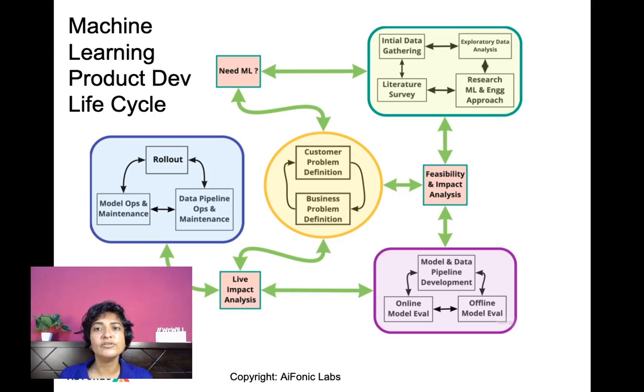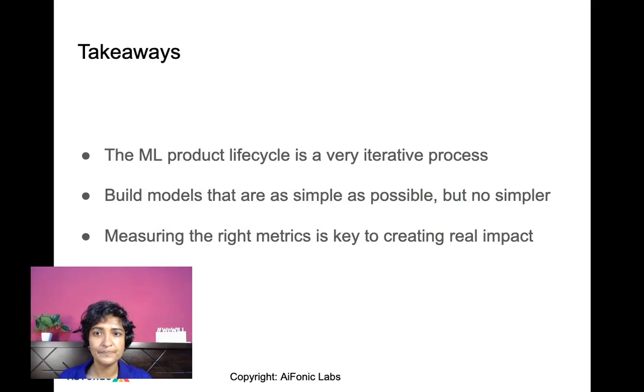So this is a brief view of the machine learning product development lifecycle. And once again, in order to minimize the risk in terms of getting the kind of impact that you want, some things to keep in mind are the ML product lifecycle is a very iterative process. We want to build models that are as simple as possible to begin with, but no simpler. Should not shy away from actually building more sophisticated models if you think they can make an impact. Measuring the right metrics is extremely important to create real impact. Thank you.